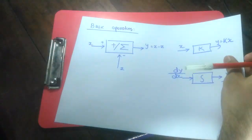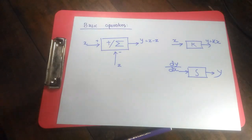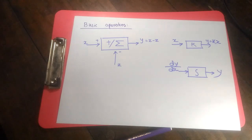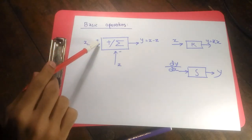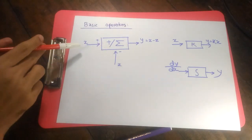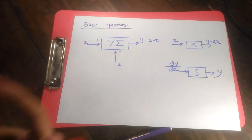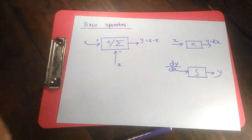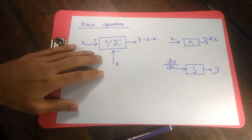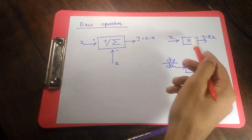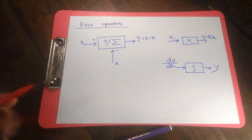We're going to know about some of the basic operators that rule the simulation diagram process. Firstly, there is going to be an adder or summation sign that basically adds or subtracts your inputs based on the sign on the arrowhead. For example, if the arrowhead shows positive for X and negative for Z, the output is going to be X minus Z. There's also going to be a multiplier: given input X and multiplication factor K, the output is simply K times X.